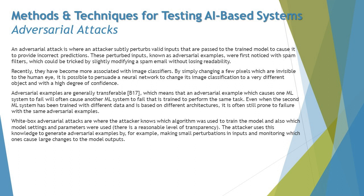The classification can change to a very different object with a high degree of confidence. For example, with a high-definition image of perhaps 1080 pixels, changing just one or two pixels can alter what the system expects from the image. When you push this as input to the trained system, the system starts behaving differently based on that small change, or sometimes it gives the right output without any change.